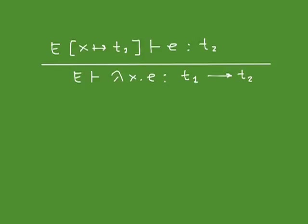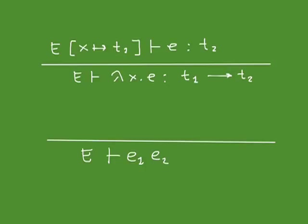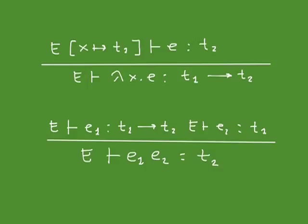For application e1 e2: you need to type e1, which should be a function of type t1 → t2 for some t1 and t2. Then the actual parameter e2 should have type t1. If that's the case, you can conclude the application has type t2.